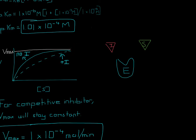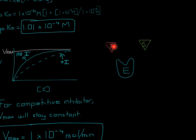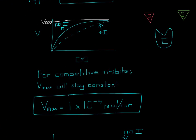Vmax stays the same because: if you have 10 inhibitors and 10 substrates, they compete for the same binding spot, reducing affinity. But if you increase substrate to 1 million, the substrates outnumber the inhibitors so much that it's almost as if the inhibitor isn't there. So as you increase substrate concentration enough, it overpowers the inhibitor, and you approach the same Vmax as without any inhibitor.